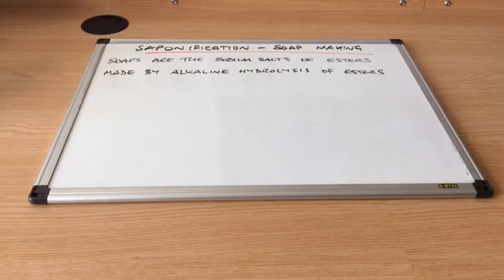The next industrial reaction I want to look at of triglycerides is known as saponification. So that just means soap making. So you can see written up there, soaps are the sodium salts of esters. And they are made by the alkaline hydrolysis of esters. So we'll look at the link with triglycerides now.